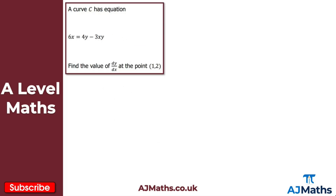Moving on to question 2. We have a curve C with equation 6x equals 4y minus 3xy. We need to find the value of dy by dx at the point (1, 2). We're going to differentiate term by term with respect to x using implicit differentiation.